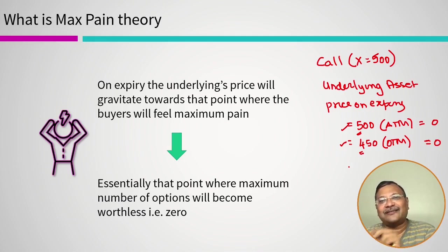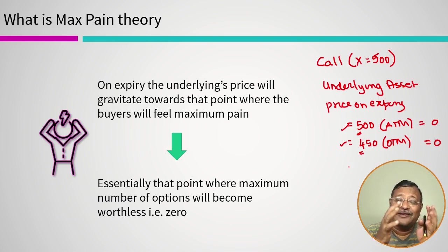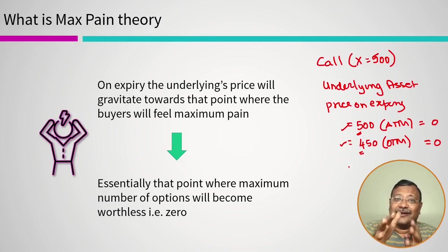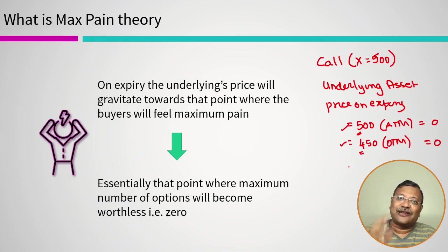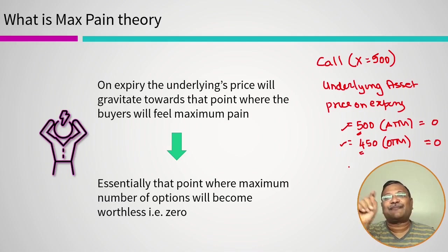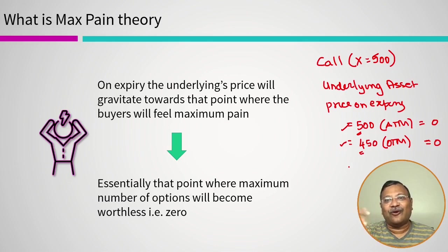High net worth individuals and institutional players are predominantly option sellers and are more knowledgeable. If we can find out at which strike price the maximum number of sellers have accumulated, that tells us the option sellers will try to push the price of the underlying asset on expiry toward that level — because that is where the maximum sellers have come in. For example, if the maximum sellers are at 500, they will do everything to push the price to 500 or below, taking the entire premium and inflicting maximum pain on buyers.